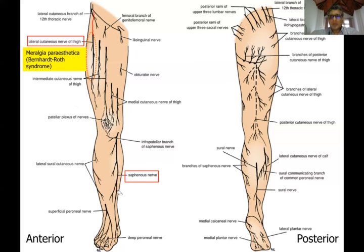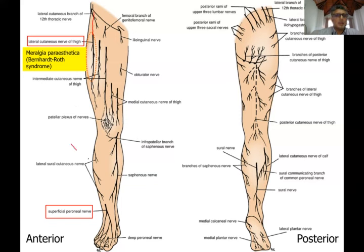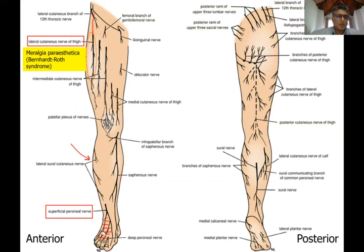The next important nerve is the superficial peroneal nerve. It is a branch of the common peroneal nerve and supplies the lateral compartment of the leg — the peroneus longus and peroneus brevis muscles. After supplying these two muscles, the cutaneous part of the nerve pierces the deep fascia in the lower part of the leg and comes to supply the dorsum of the foot.